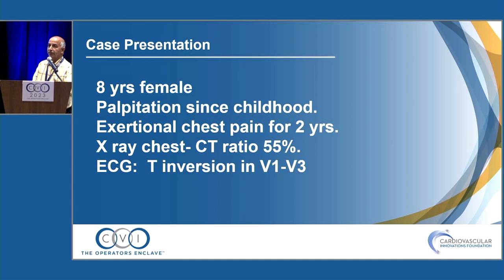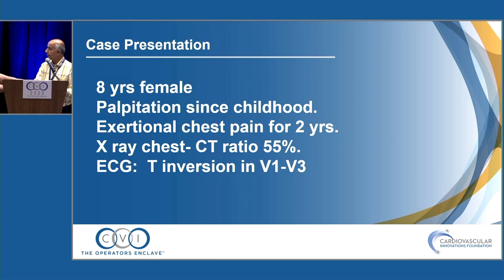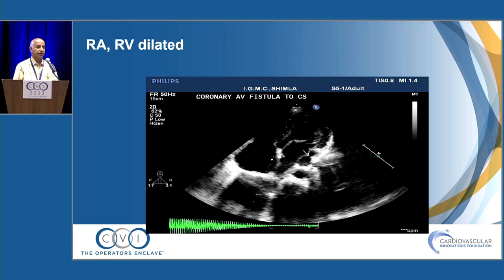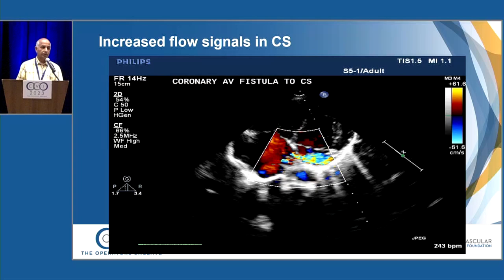My case is an 8-year-old female who presented with palpitations since childhood and exertional chest pain for the last two years. Chest X-ray shows CT ratio of 55%, and ECG showed T-wave inversion in V1 to V3. The case was referred from outside with a suggestion of ASD, but when we saw the case, we found the coronary sinus was quite dilated, giving us suspicion of fistula. There is right atrium and right ventricle enlargement, and dilated coronary sinus.